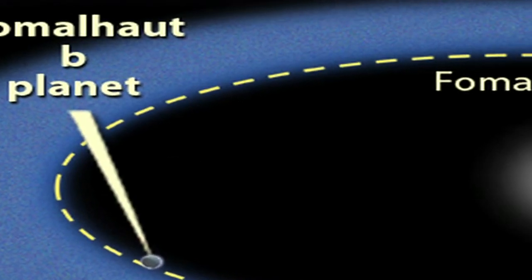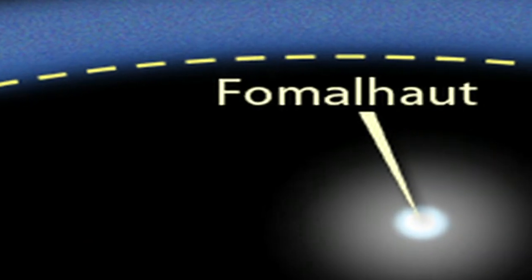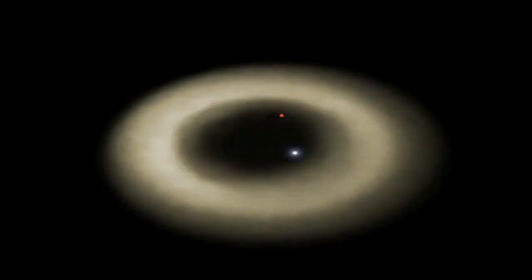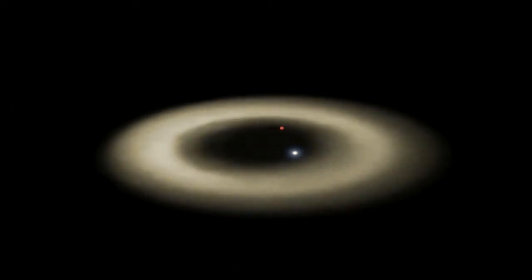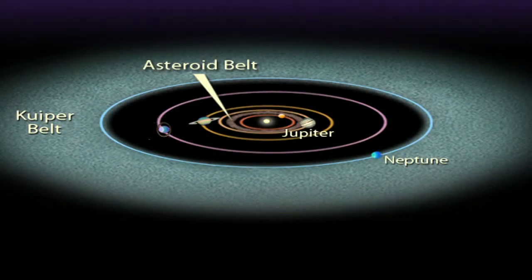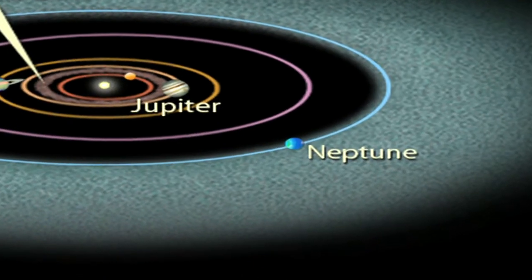A planet gravitationally bound to the star known as Fomalhaut. That solar system even looks like ours with a distinct disc of debris similar to our own Kuiper Belt. A telltale sign a planet is nearby.